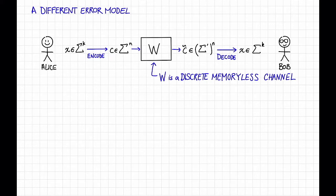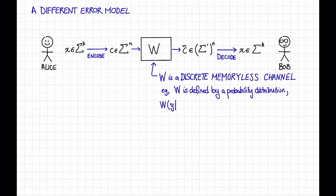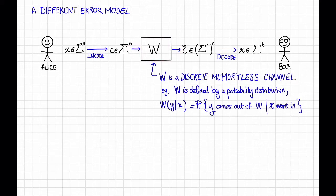In other words, w is defined by a probability distribution of what's the probability of a symbol coming out based on the symbol coming in. Let's denote this w of y given x. This is the probability that y comes out of this box, given that x went into it. Here y is in the output alphabet sigma prime, and x is in the input alphabet sigma. And again, we're imagining that w is going to act independently on every symbol of the codeword c.